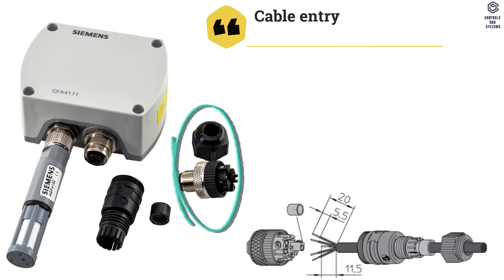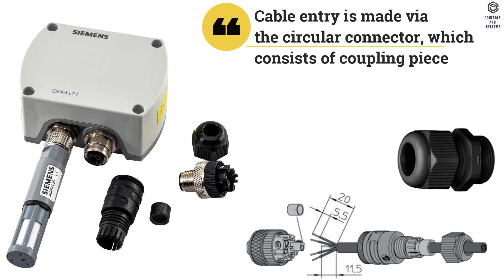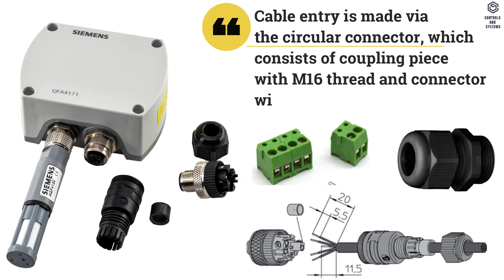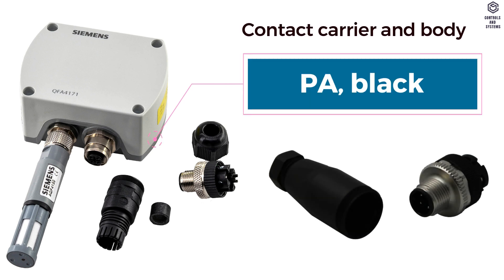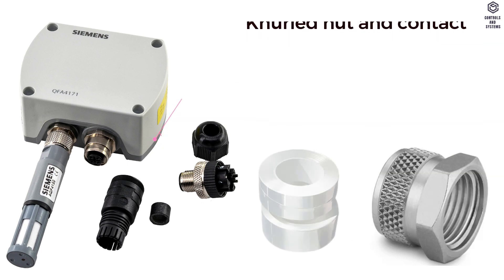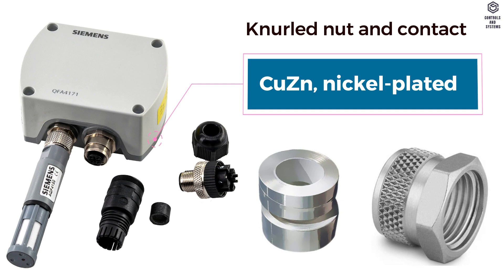Circular connector. Cable entry is made via the circular connector, which consists of coupling piece with M-16 thread and connector with screwed plug. Connector with screwed plug is Lumberg SC49.9. Contact carrier and body is PA black. Knurled nut and contact is copper or zinc.